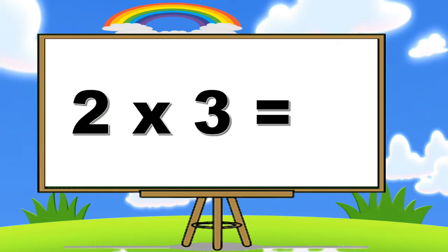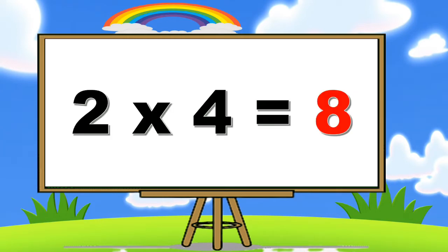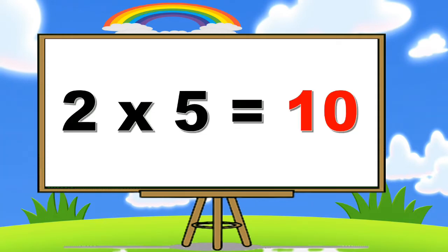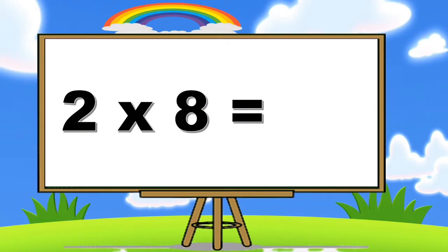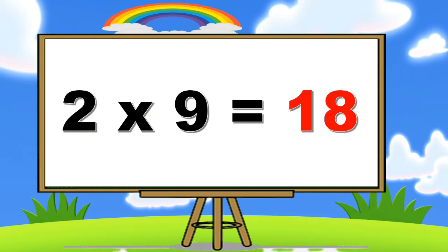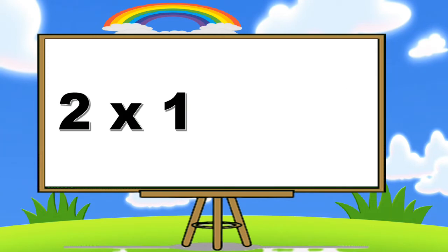Two threes are six. Two fours are eight. Two fives are ten. Two sixes are twelve. Two sevens are fourteen. Two eights are sixteen. Two nines are eighteen. Two tens are twenty.